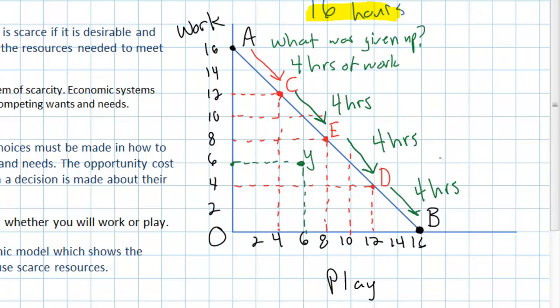This works in the opposite direction as well. If you wish to spend more time working, the opportunity cost is the benefit and enjoyment you could have gotten from an hour of play. One hour of work equals one hour of play — that tells you the opportunity cost of work, or equally the opportunity cost of play, in this example.